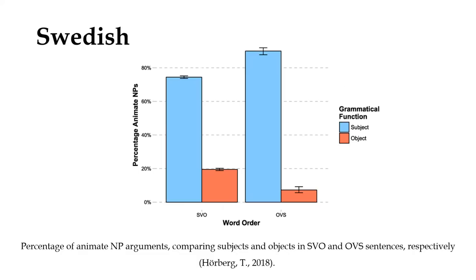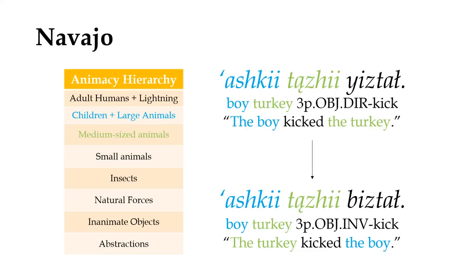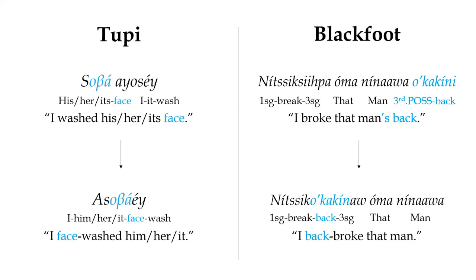Regardless of what grammatical role they're filling, the human preoccupation with animate nouns means that they'll usually be seen as more important or relevant to the conversation, and will therefore have a greater degree of focus put on them, which often involves placing them closer to the beginning of the sentence. This is taken to the extreme in Navajo, where the nouns in a clause must always come in order from most animate to least animate, the grammatical relationship between them being inferred purely through the marking on the verb. In languages with noun incorporation, nouns of lower animacy are generally more likely to be incorporated into the verb, which decreases their salience within the clause while letting the animate nouns fill the roles of core arguments.